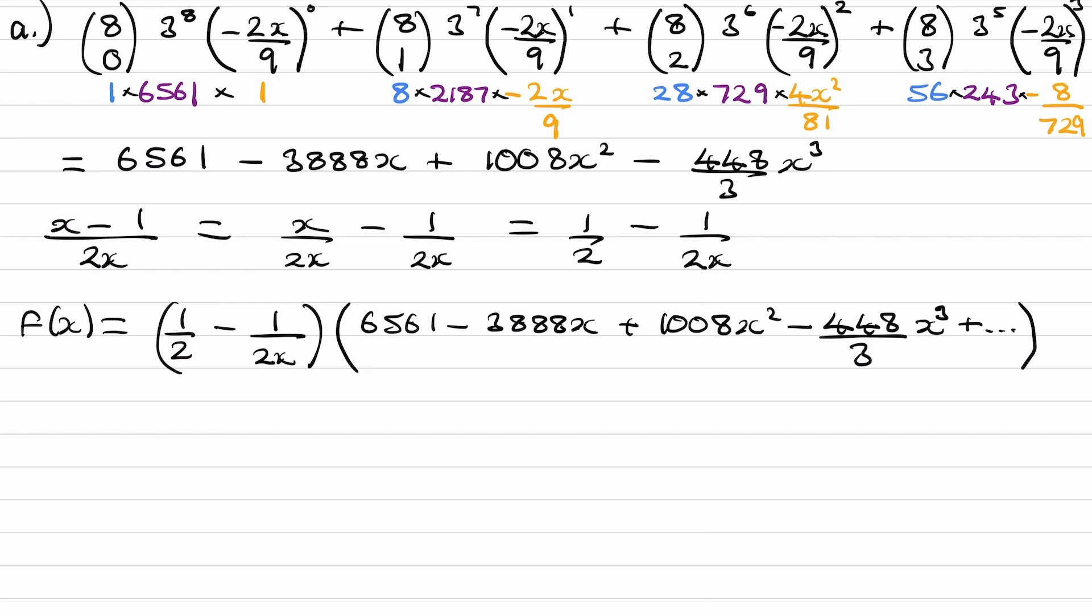It would be the 1/2 multiplied by this, the 1008 times x². That will give us x². And also, the -1/(2x) multiplied by the -448x³/3.